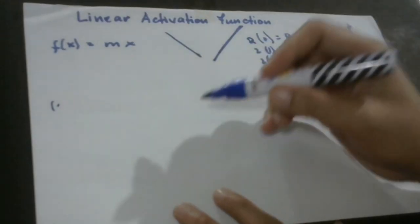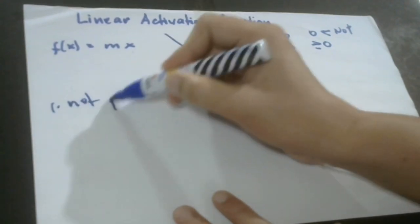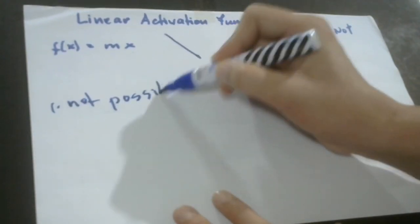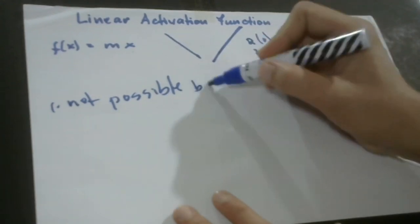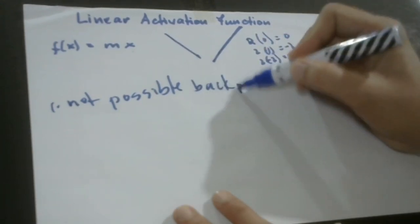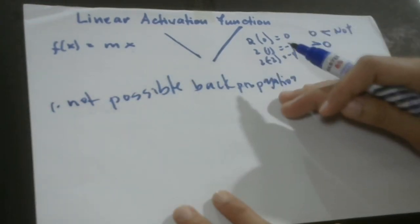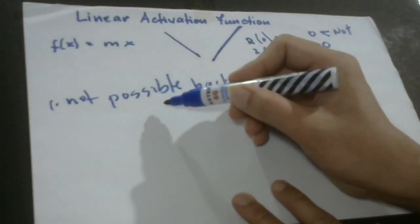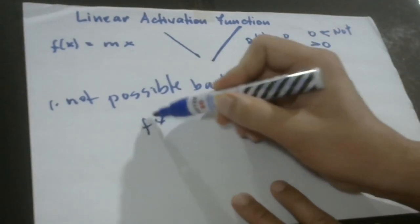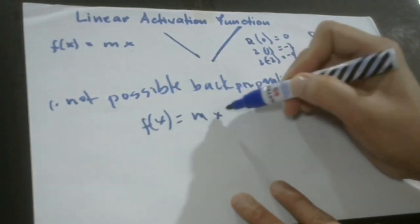Let's have the first one. The first problem is that it is not possible to use backpropagation as the derivative of the linear activation function. So why is that? When we have this function of x, let me write this one here first. The function of x is equal to mx.